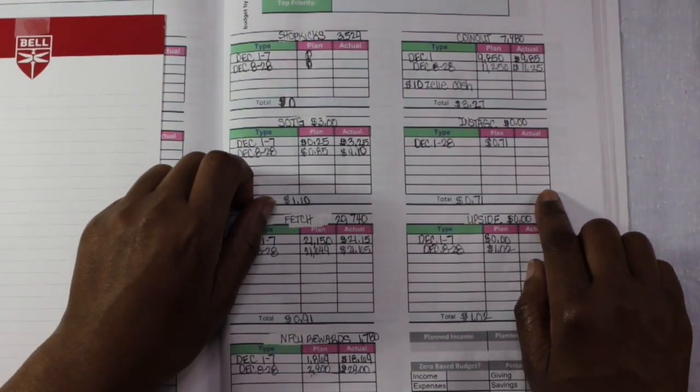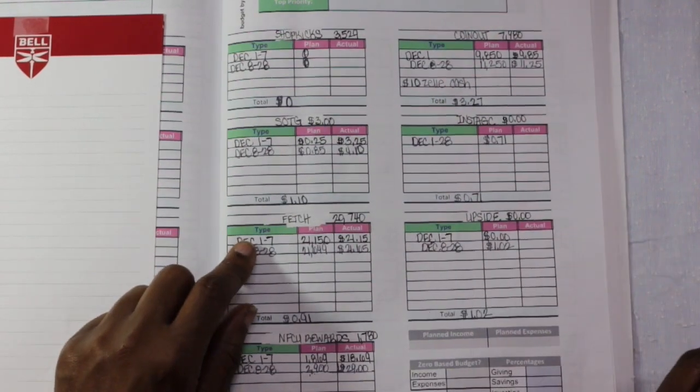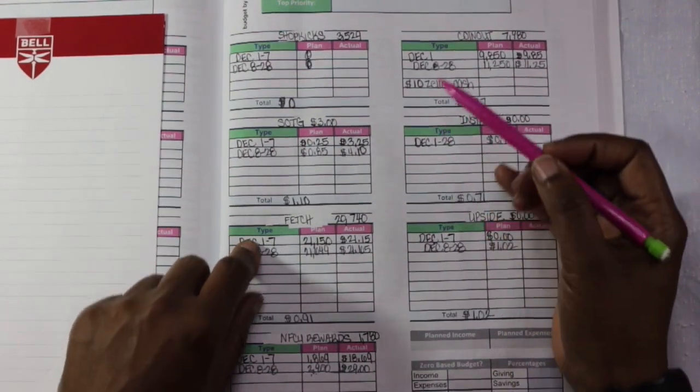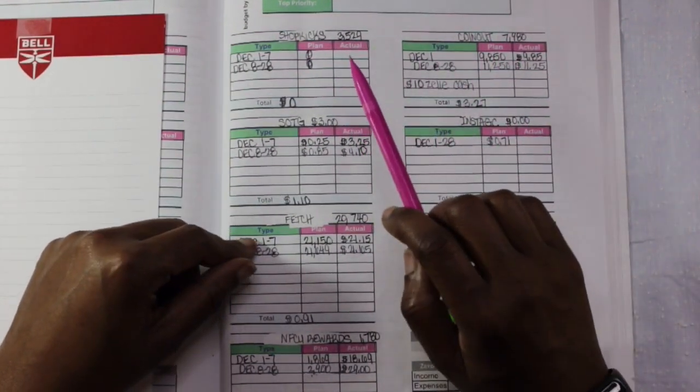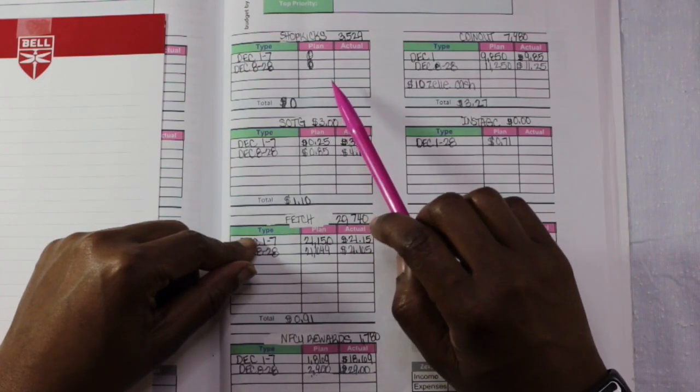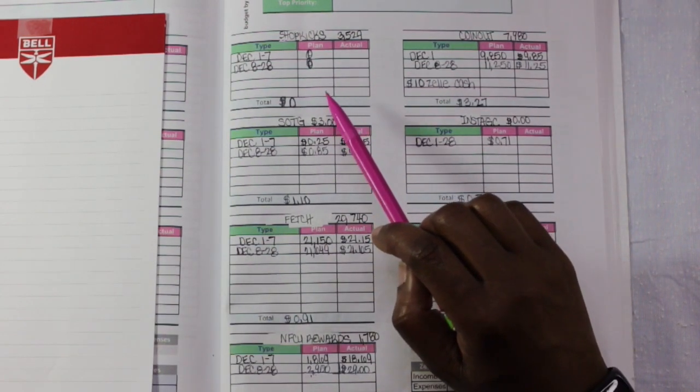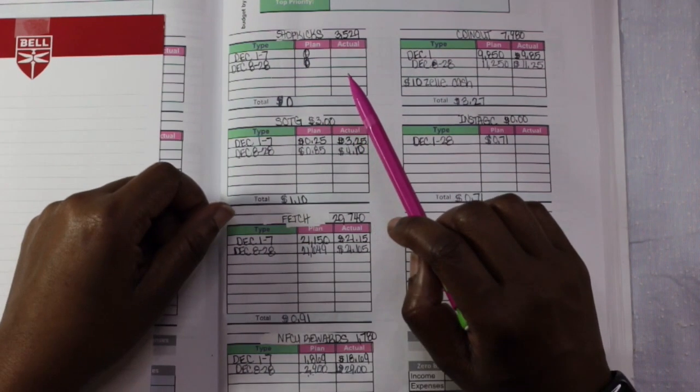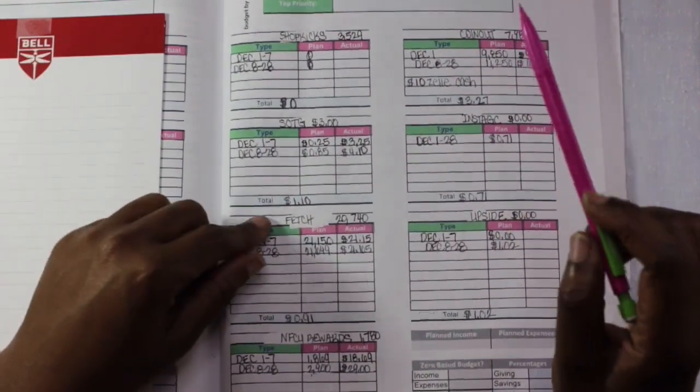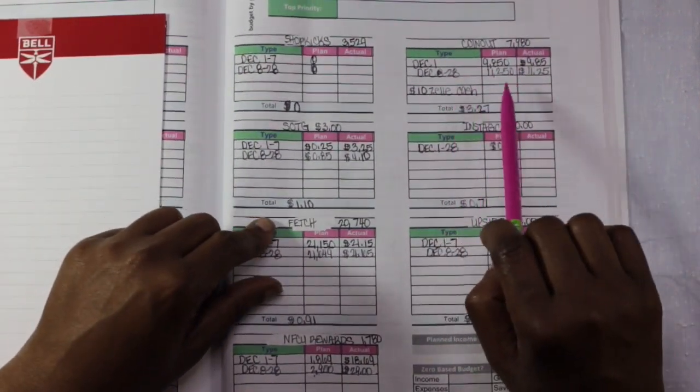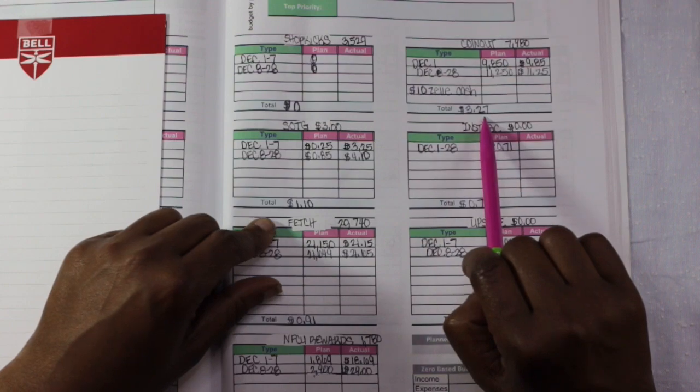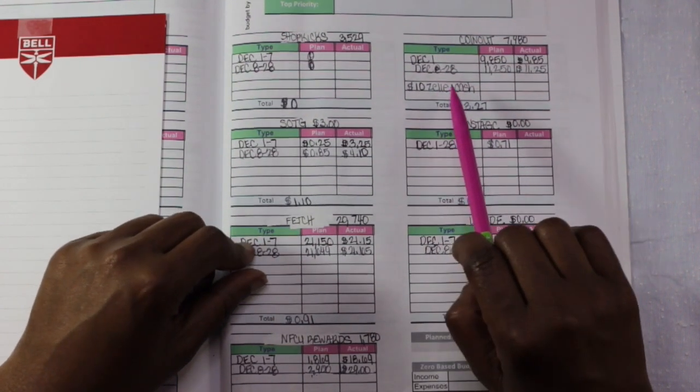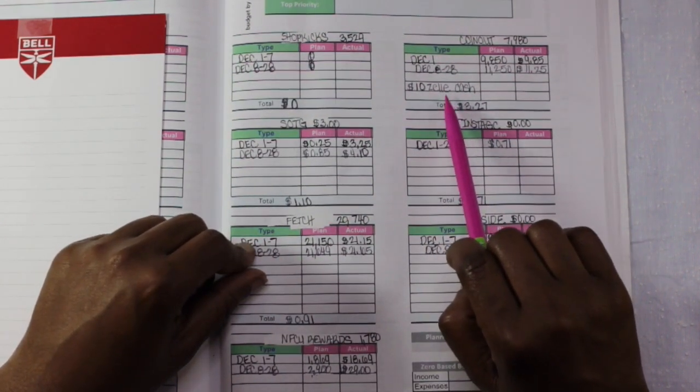The first one that we're going to look at is Shopkick. Didn't do much with this app right here for the month of December. However, I want to start using it a little bit more because all you have to do is just scan products in stores and you get points for it. Very simple, very easy. Next we have Coinout. I earned $3.27. I will be sending myself $10 in cash.